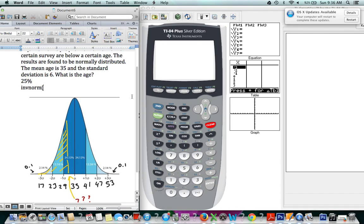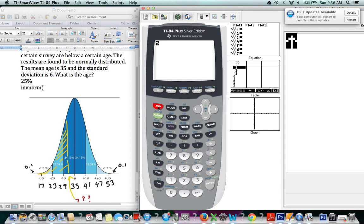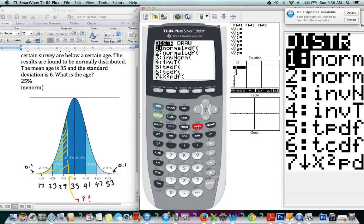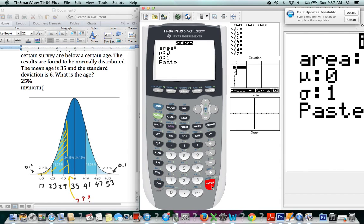So we get to it in the same way we got to the normal CDF, by going to second distribution, which is the bars button, and we're looking at the third one this time, invnorm. So again, if you have the new calculator it will look like this, which is a little bit easier.